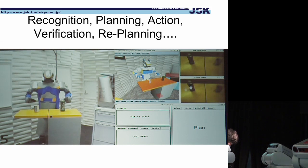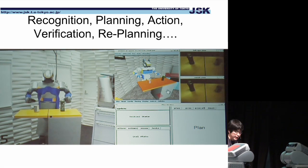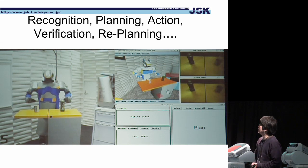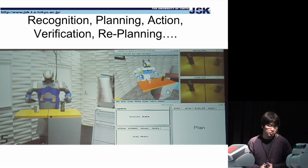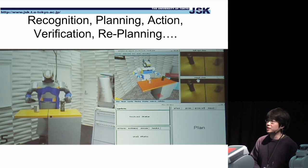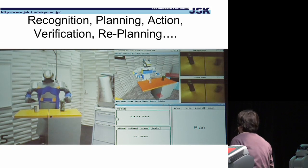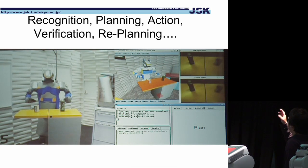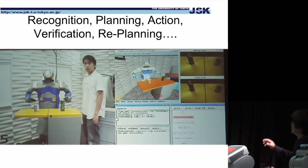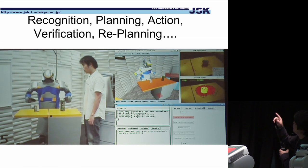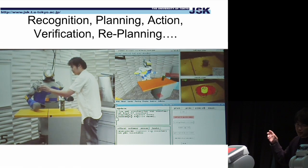This is a demonstration that I always show when you visit JSK. We call this demo '2007 July,' which means it was programmed in 2007. Here, we integrate a vision system, a planning system, and an action system. By using this integrated system, we can verify the motion.